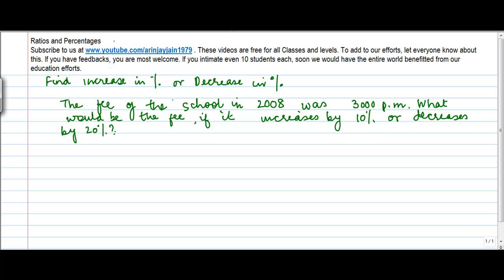Now what has happened in this problem is that we are told that a particular school had a fee of 3,000 per month. Now there are two situations: one when there is an increase in the fee and second when there is a decrease in the fee. Now we know that any number is equal to hundred percent, so the original base that you have or the quantum that you are given is equal to hundred percent.